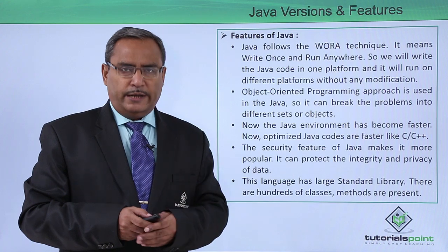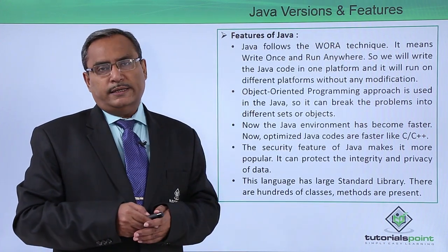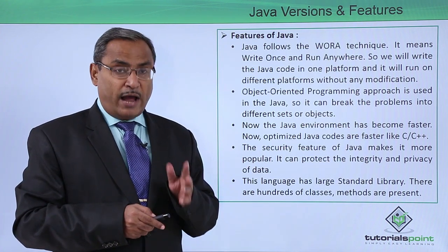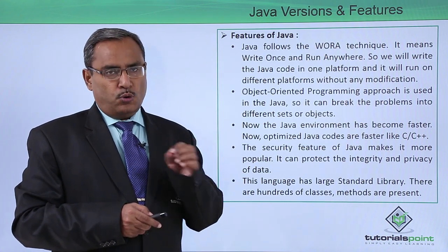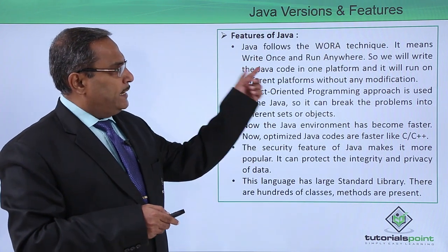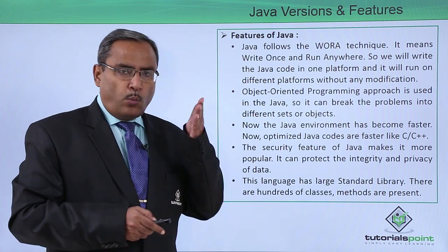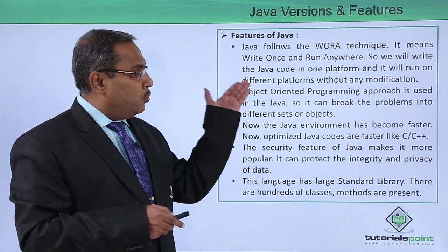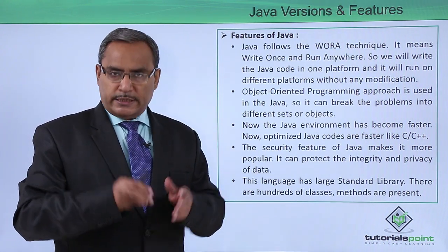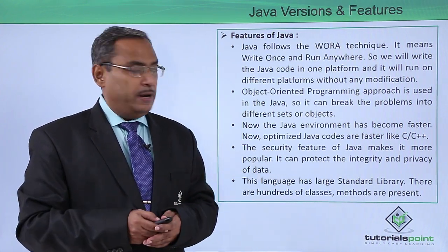Now let us go for some more detailed discussion on Java features. Java follows WORA — that is W-O-R-A — which stands for Write Once and Run Anywhere. We will write the Java code on one platform and then the code will run on different platforms without any modifications, because Java has a dedicated runtime environment where code runs in a platform-independent way.